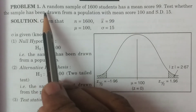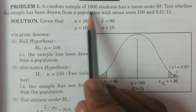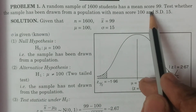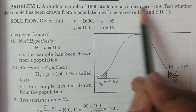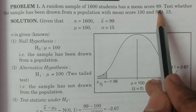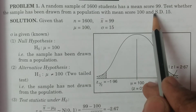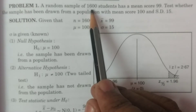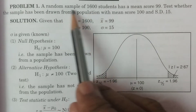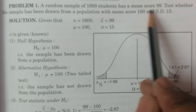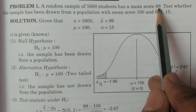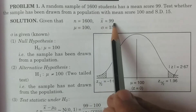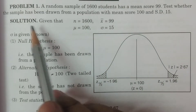Problem one: a random sample of 1600 students has a mean score of 99. This is a single sample test. So n is equal to 1600 and X bar is equal to 99.